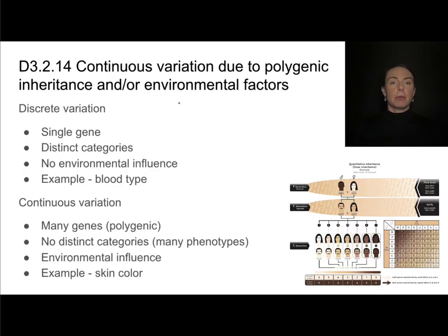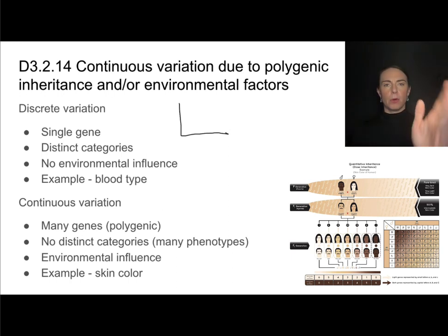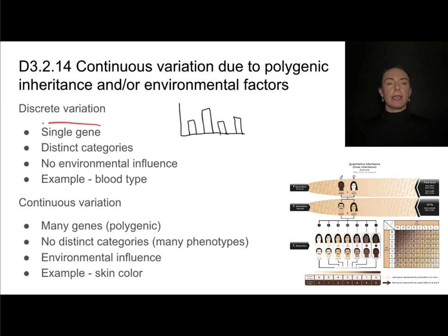Something like blood type or hemophilia represents discrete variation — you can either have hemophilia or not, or you have type A, B, O, or AB blood, with nothing in between. We see this kind of variation when a trait is controlled by a single gene, causing individuals to fall within distinct categories. This is also a case where there is no environmental influence.